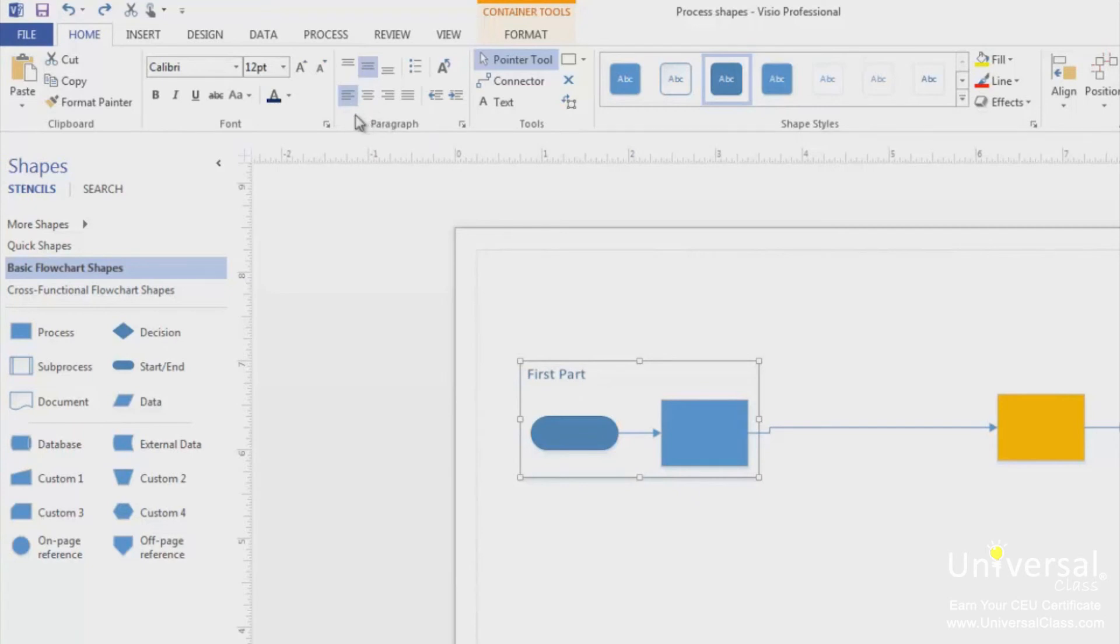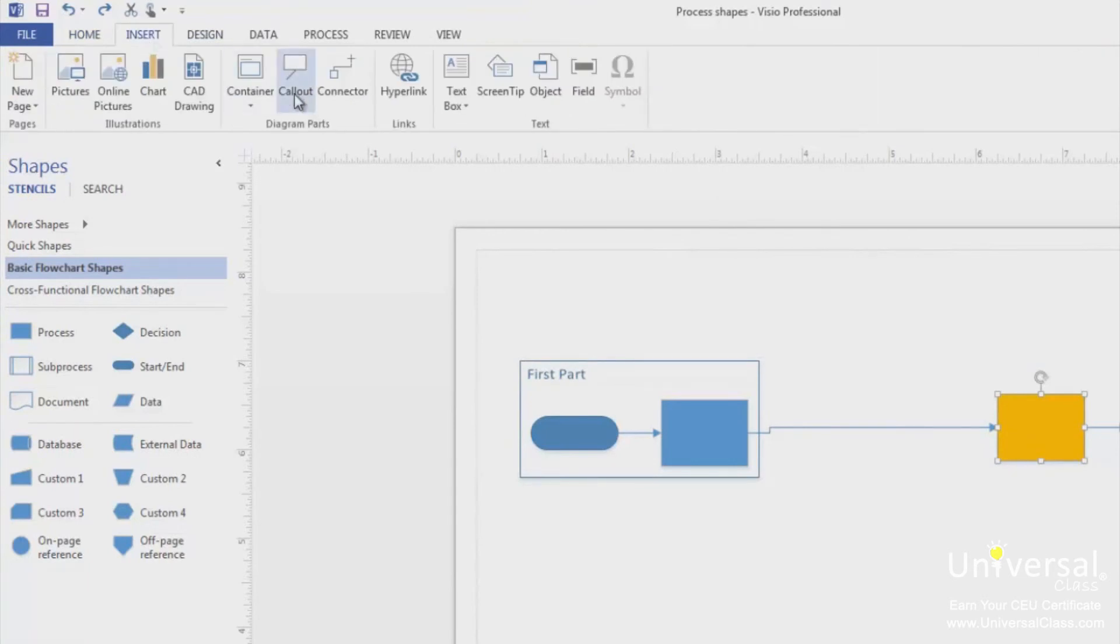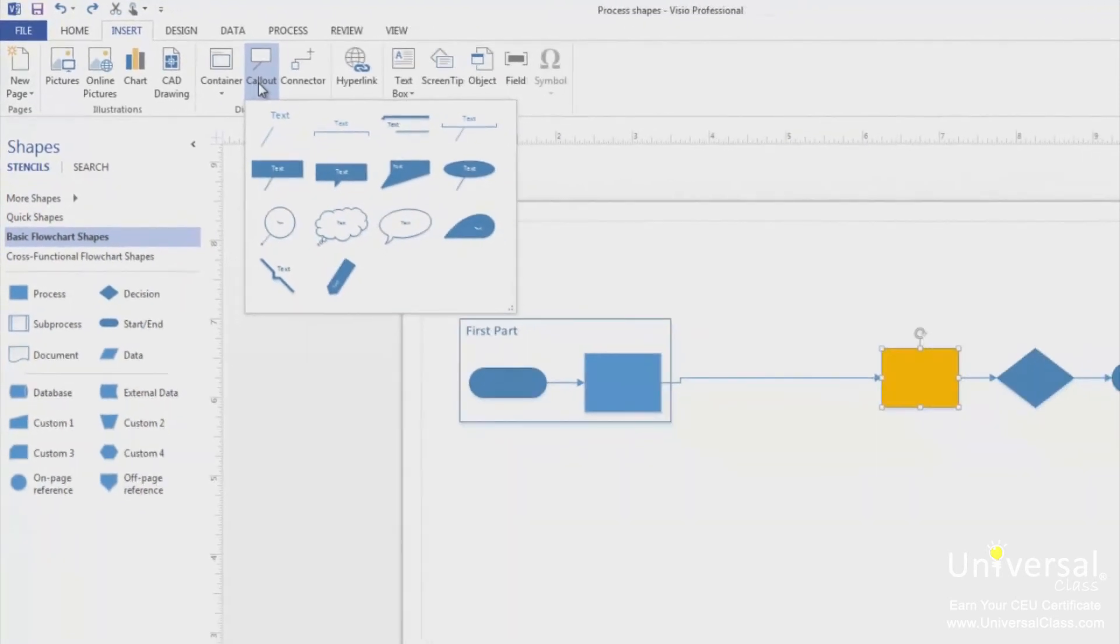First, select a shape that you would like to associate with a callout. Next, go to the insert tab and click on callout. Choose a style of callout that you would like to use with this shape. You can hover your mouse over a callout and see a preview of how it will look in your drawing. Click on a callout to select and associate it with your shape.